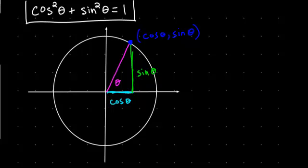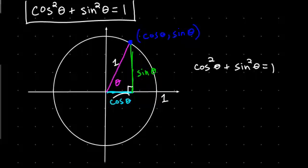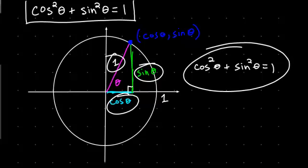We know we're on the unit circle, so it has a radius of 1, meaning this hypotenuse has a length of 1. We know this is a right angle, so we can use the Pythagorean theorem to get cosine squared theta plus sine squared theta equals 1. That is, this side squared plus that side squared equals the hypotenuse squared. That gives us the fundamental identity: cosine squared plus sine squared equals 1.